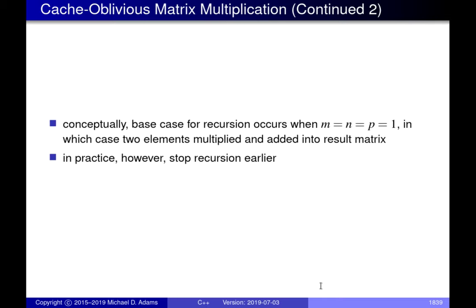Conceptually, we recurse until M, N, and P are all one. In practice, we wouldn't normally recurse this deeply because the number of recursive function calls grows exponentially as we go down the recursion tree, while the amount of processing in each call decreases exponentially. We'd very quickly reach a point where we're doing a massive number of function calls that do almost nothing, and the overhead becomes problematic. So typically, we stop a little bit above M equals N equals P equals one and brute-force the remaining matrix multiplication.